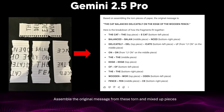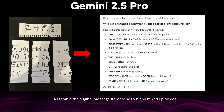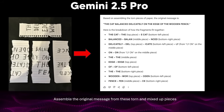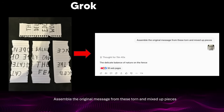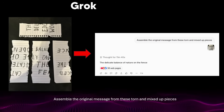I also tried Gemini 2.5 Pro, and it actually managed to get the text right — the only thing it didn't do was reconstruct the image visually. Then I tried Grok, which reasoned for 11 minutes and 40 seconds, and its final answer was 'the delicate balance of nature on the fence,' which was incorrect.